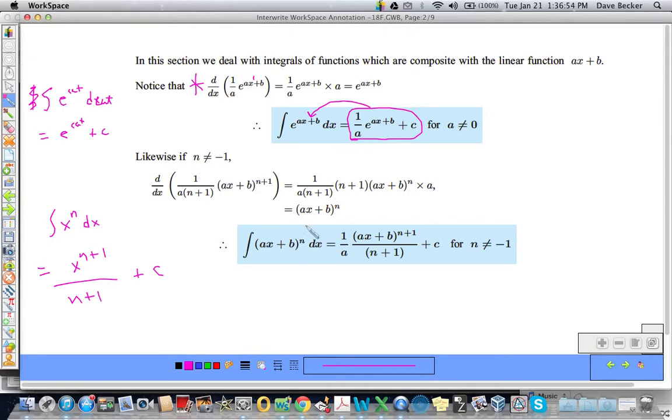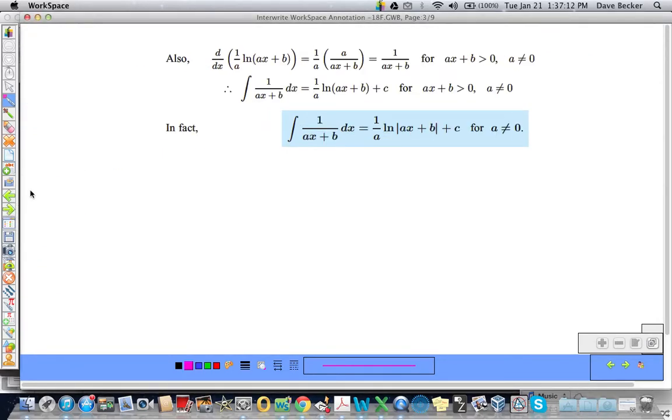So the moral of the story is we still integrate E to the cat the same way we did before, and we still integrate a power function the same way we did before. It's just that if it's in the form AX plus B, the only difference is we have to multiply it by 1 over A.